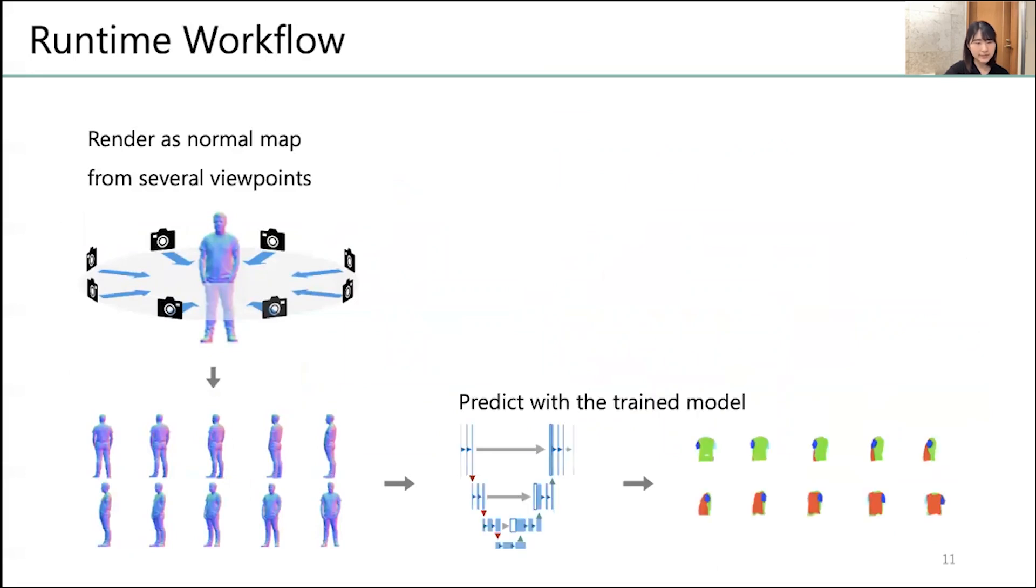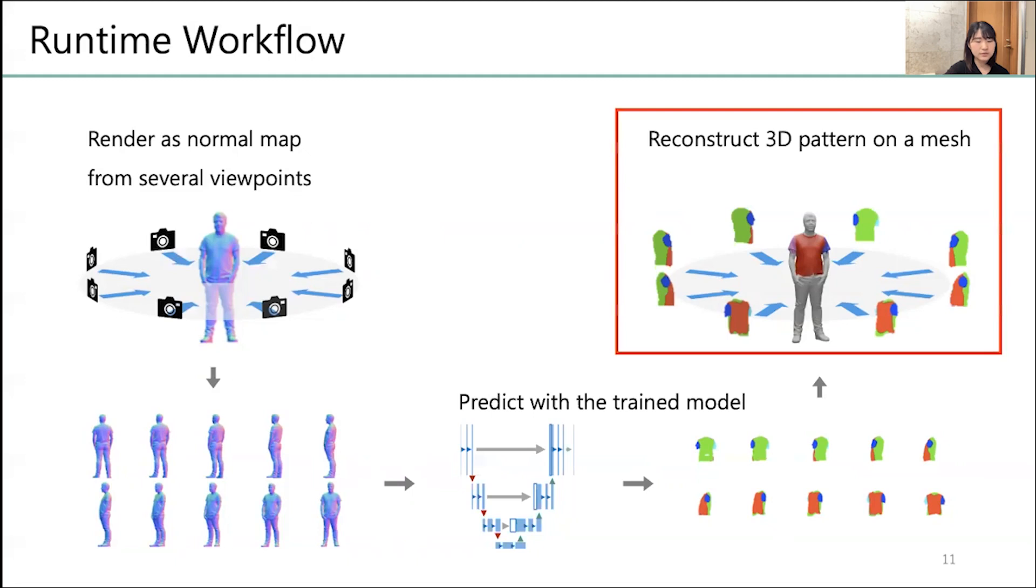Next, we input all of those normal maps into a trained network to get estimated patterns as a label for each pixel. Finally, by projecting the resulting pattern onto a 3D mesh, a 3D estimated pattern can be reconstructed on the mesh.